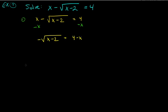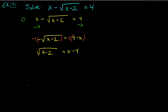Don't be too alarmed by the negative — the right side's sign depends on x. Multiply both sides by negative 1 to make the square root positive: square root of (x minus 2) equals x minus 4. Now the radical is isolated. Remember, you can't add the 2 yet — you have to get rid of the square root first.